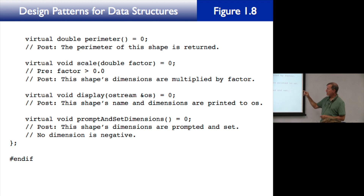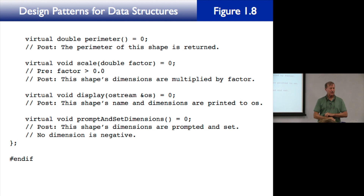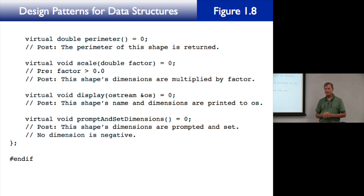Scale has a precondition but perimeter does not. What happens if a user calls a method with a precondition and violates it? The program crashes and gives you an error message explaining why it crashed. So violating a precondition is to be avoided.